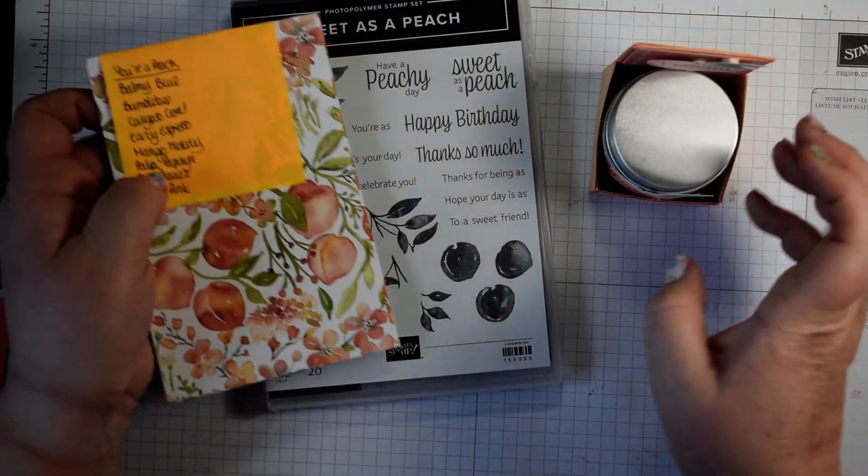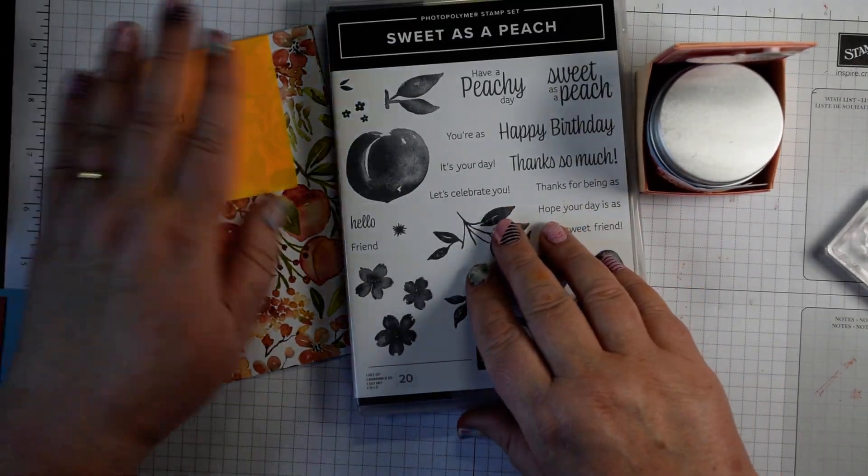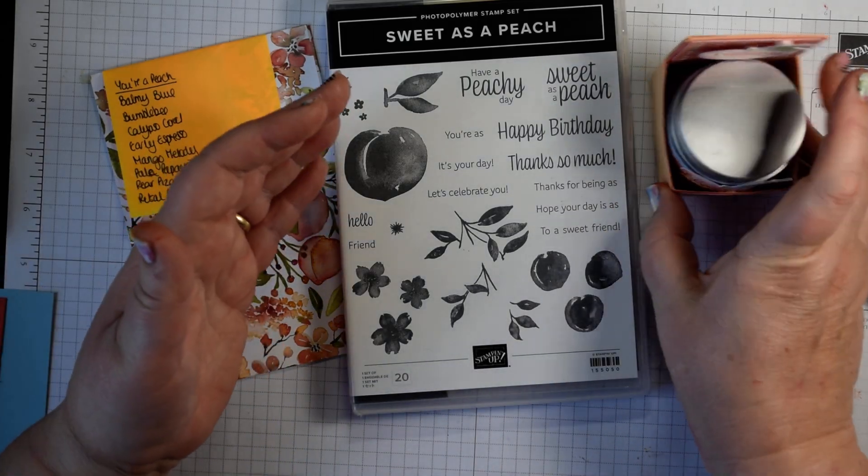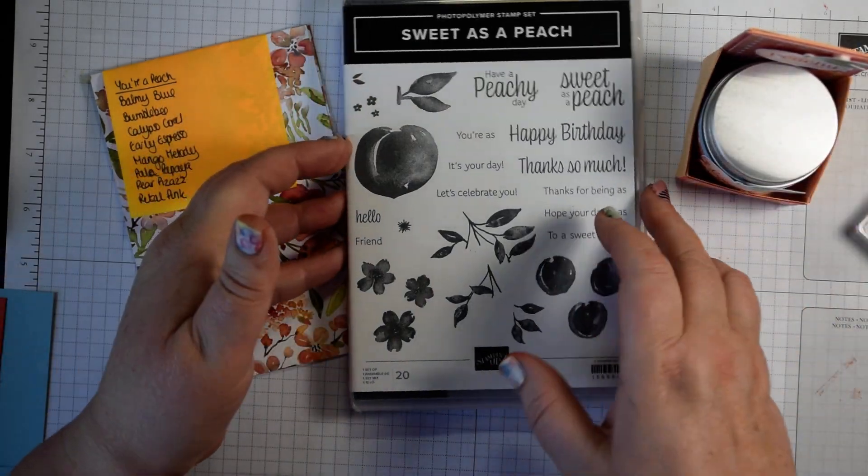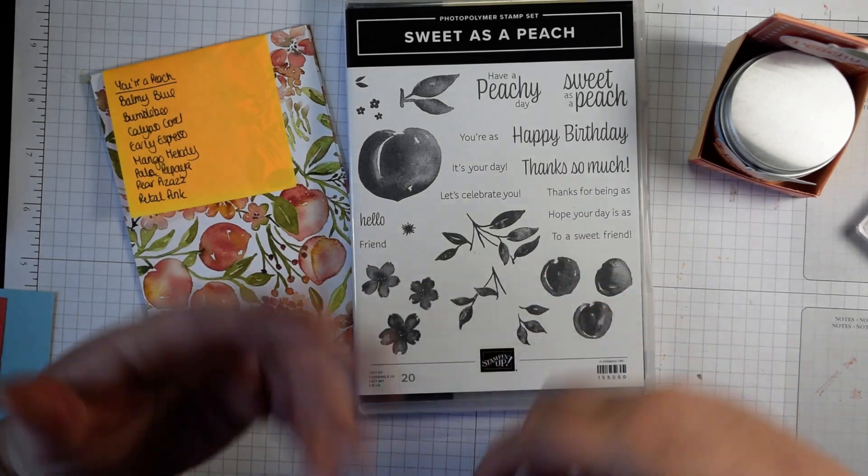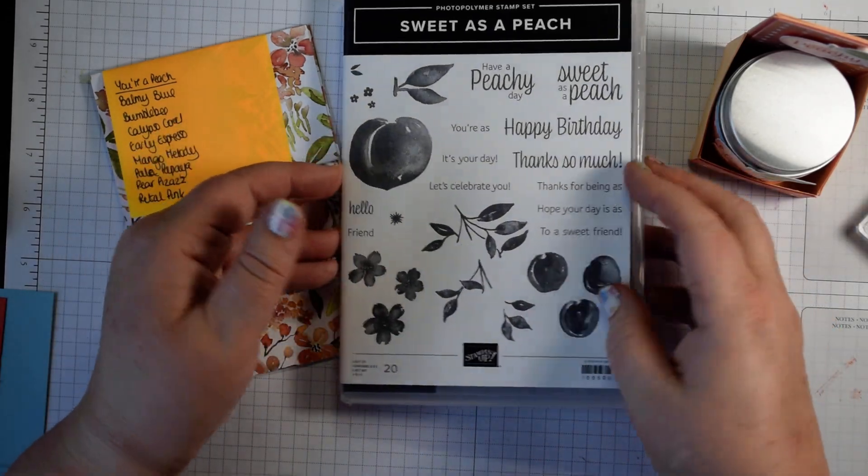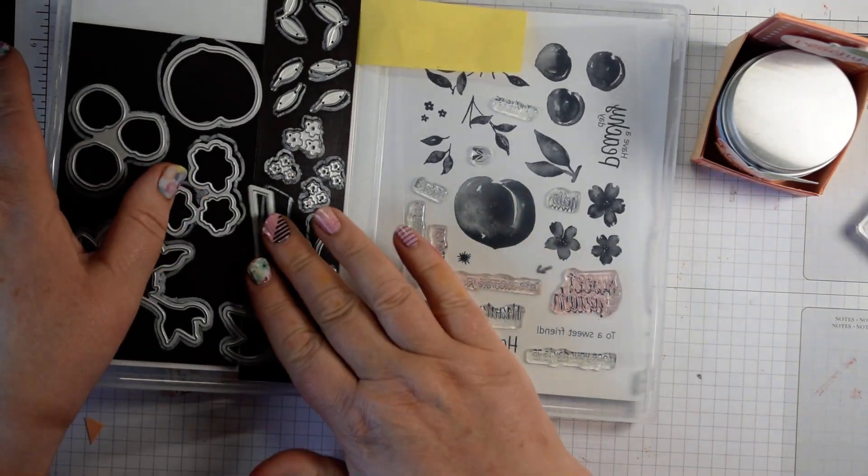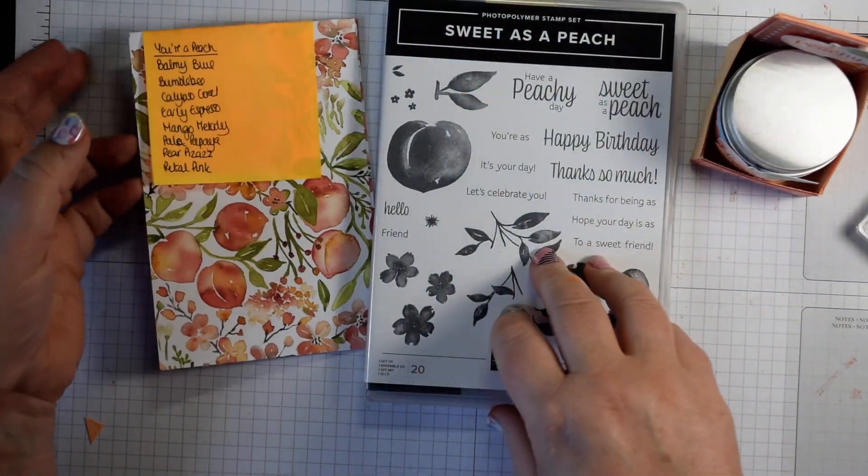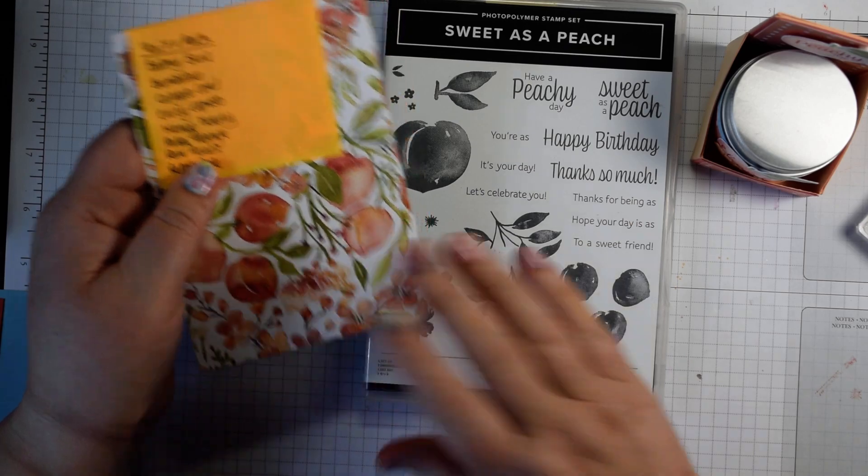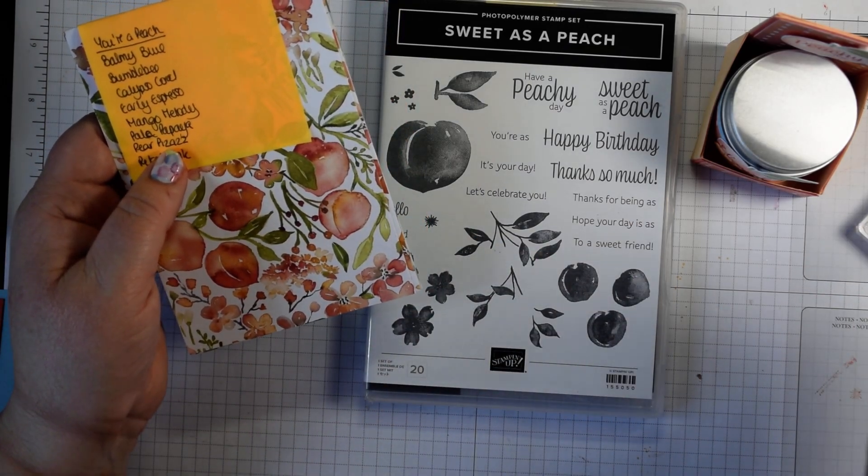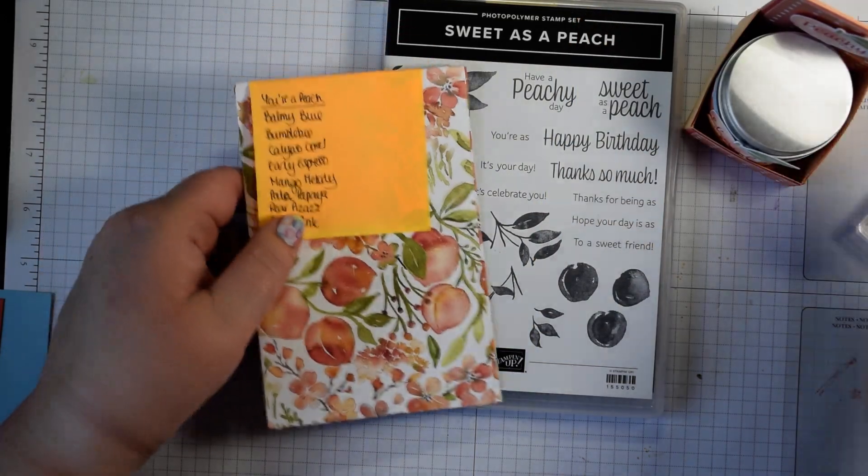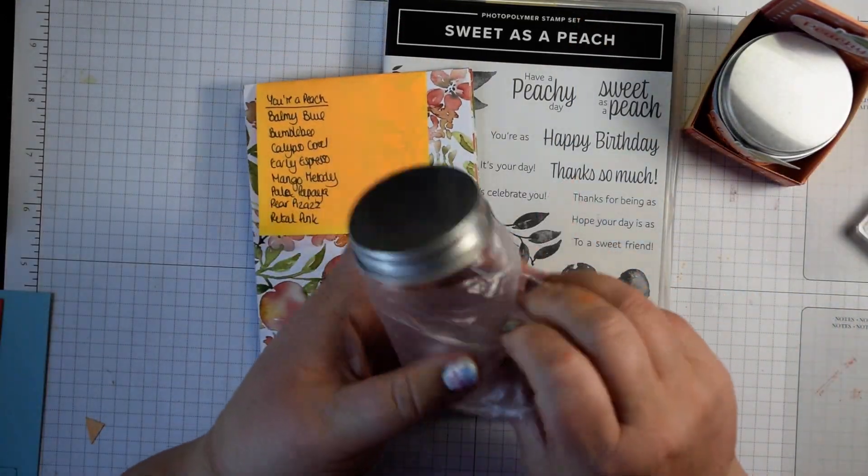This is a lovely suite of items in the new catalogue. New bundles mean new sweets, with just four items which makes it super inexpensive to get a whole load of coordinating items. This one is Sweet as a Peach stamp set with coordinating dies to cut out those lovely images. We've got the DSP and we've got the little jars as well. These little jars are mini jam jars.